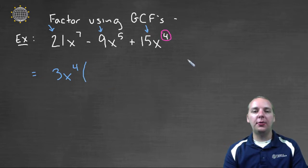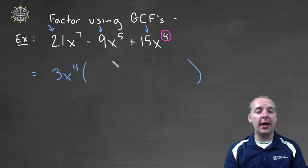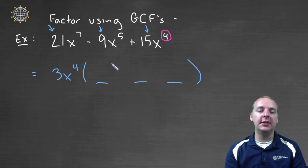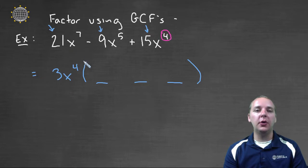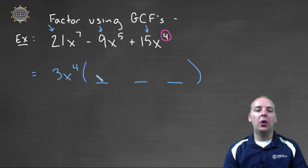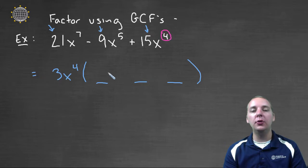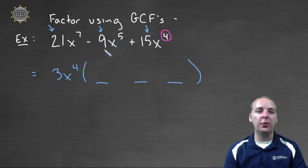If you have three terms in your original polynomial, you're still going to have three terms in your factored polynomial once the GCF has been pulled out. You have to figure out what the new terms are going to be — think about what you would need so that if you distributed three x to the fourth to those terms, you would get the original polynomial back.